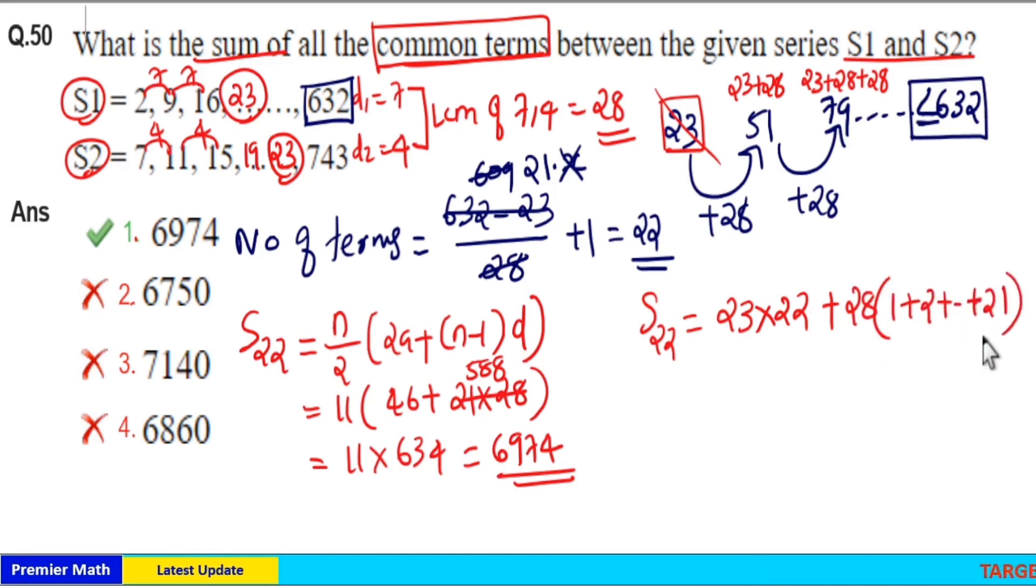Now this is equal to 23 into 22 plus 28 into sum of natural numbers from 1 to 21, which is equal to n into n plus 1 by 2. So 21 into 22 divided by 2. If you solve this you will get the same answer 6974. So if you don't know this formula you can use this method.